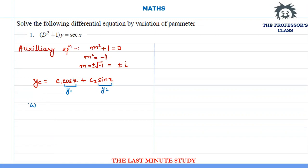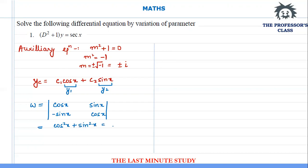Using y1 and y2, I'll identify the parameter W. In the first row I write down y1 and y2, and in the second row I differentiate them: y1' = -sin(x) and y2' = cos(x). The determinant becomes cos²(x) + sin²(x), which equals 1.